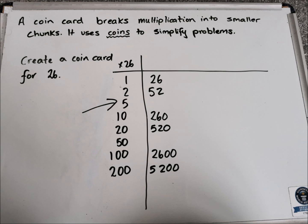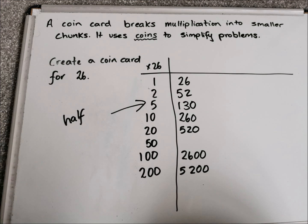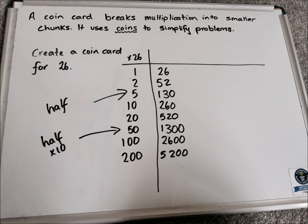The last step in solving a coin card is using our knowledge of halving. So we half the 10 to find the answer for 5, because half of 10 is 5. So if we half the answer for 10, we'll find the answer for 5 — we half 260 and we get 130. To find the answer for 50, we times the answer we have for 5 by 10, because 5 times 10 is 50. So we get 1,300.